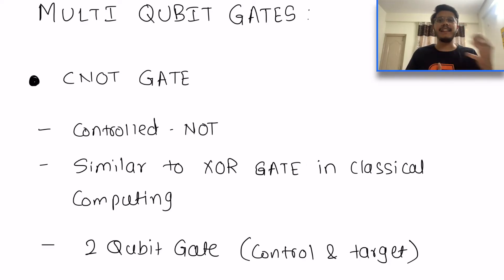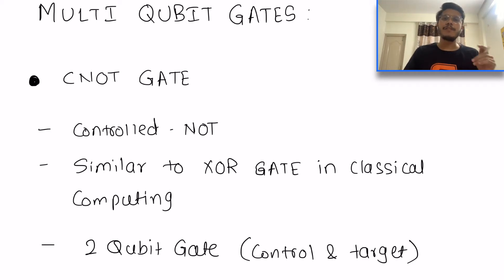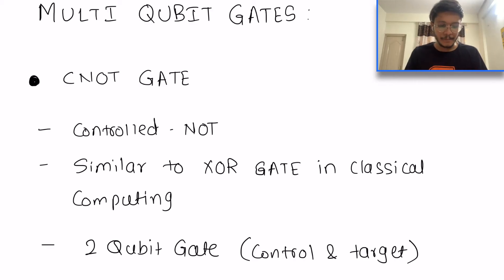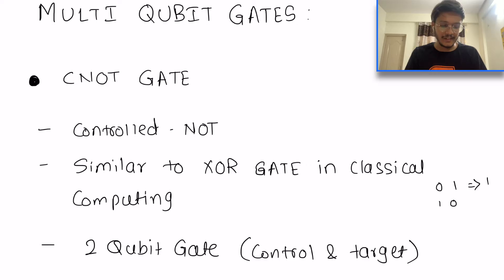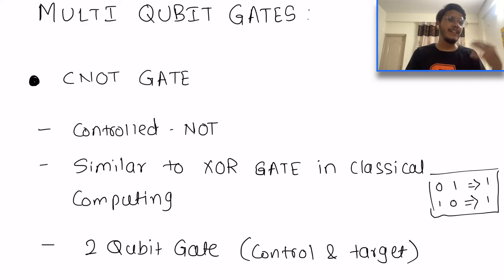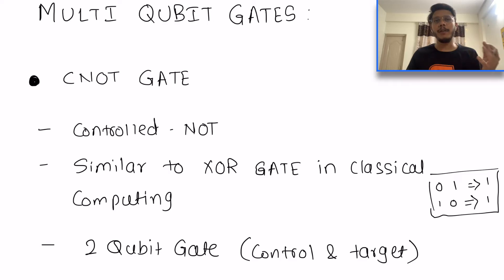If you correlate CNOT with classical computing, it is exactly similar to the XOR gate. The XOR gate outputs 1 when your two input bits are different — for example, 0 and 1 gives output 1, or 1 and 0 gives output 1. When both bits are the same, the output is 0. We get the same output when we apply the CNOT gate on two different qubits.